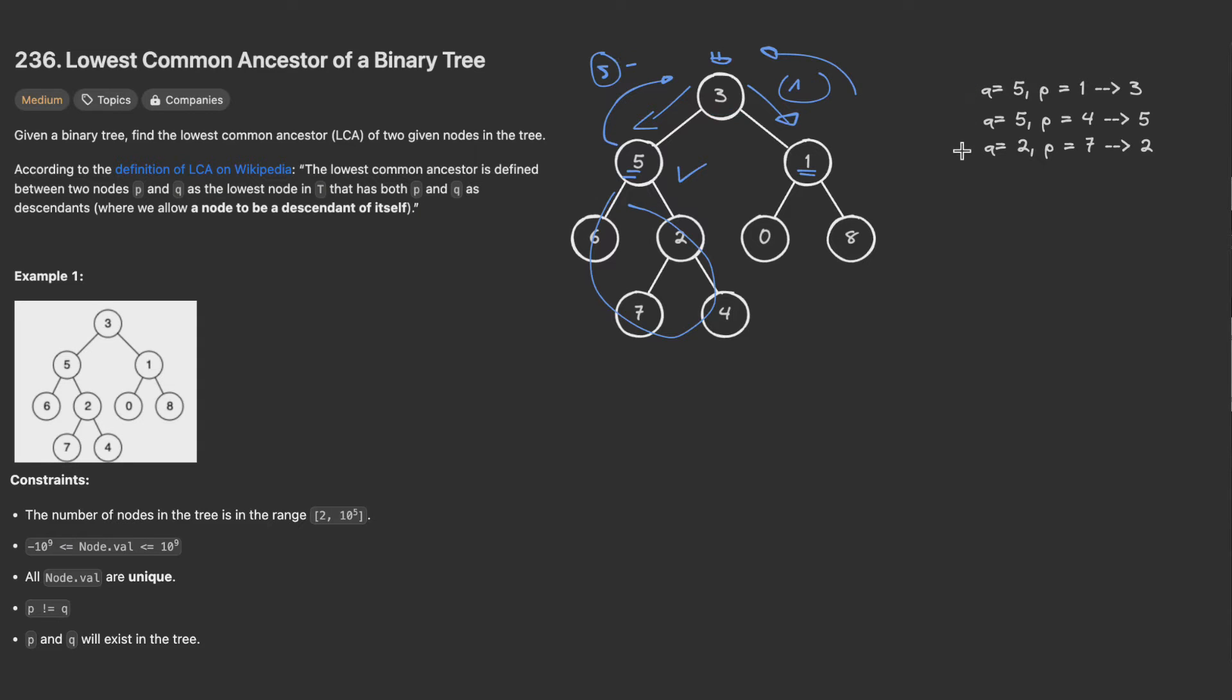Now let's take another example. Let's assume we want to find the lowest common ancestor for value 5 and value 4. We see that the lowest common ancestor is node 5. In the same way we start from the root. Does this value equal 5 or 4? False. So let's go left.